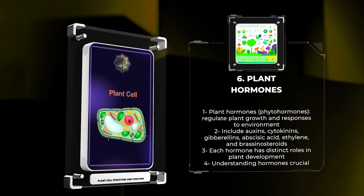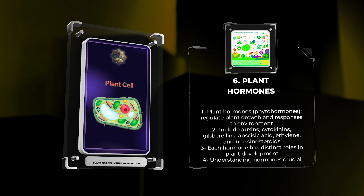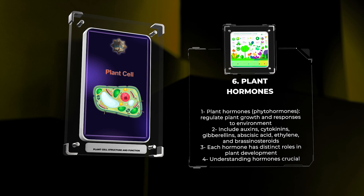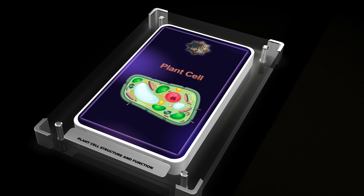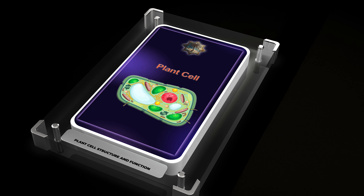Plant hormones, or phytohormones, regulate plant growth and responses to the environment. They include auxins, cytokinins, gibberellins, abscisic acid, ethylene, and brassinosteroids, each with distinct roles. For example, auxins control cell expansion, cytokinins promote cell division, and gibberellins regulate stem elongation. Understanding these hormones is crucial for improving crop yields.